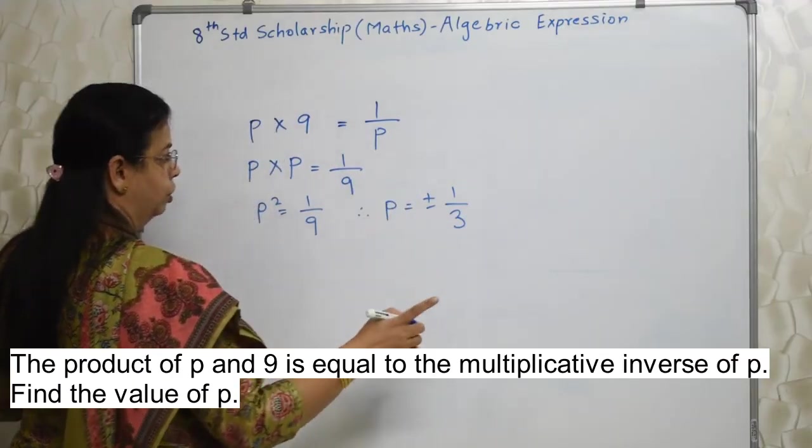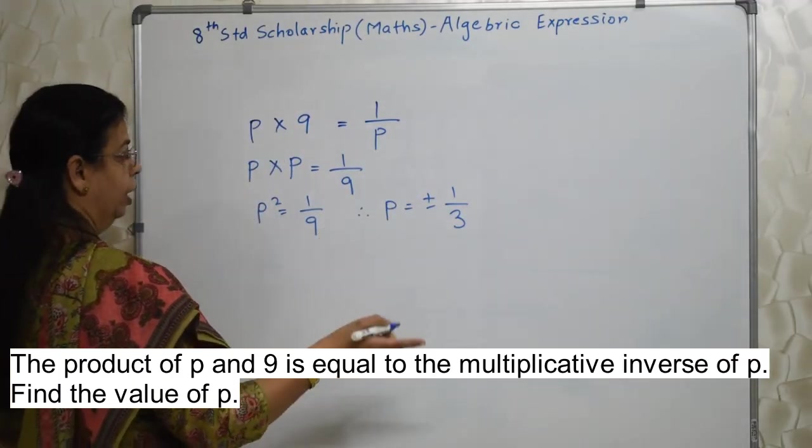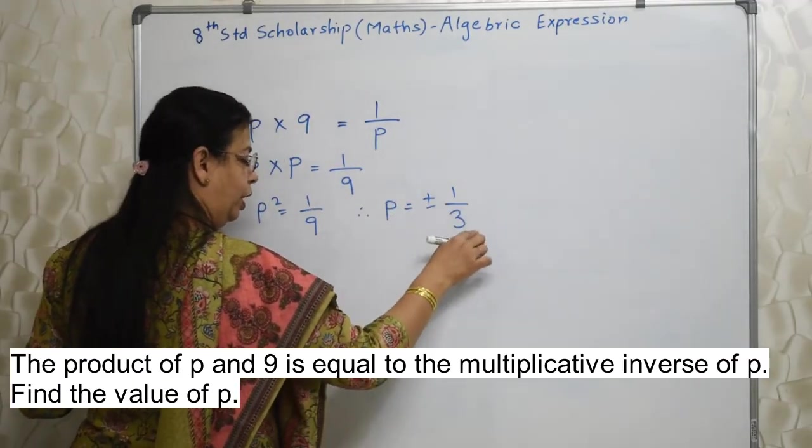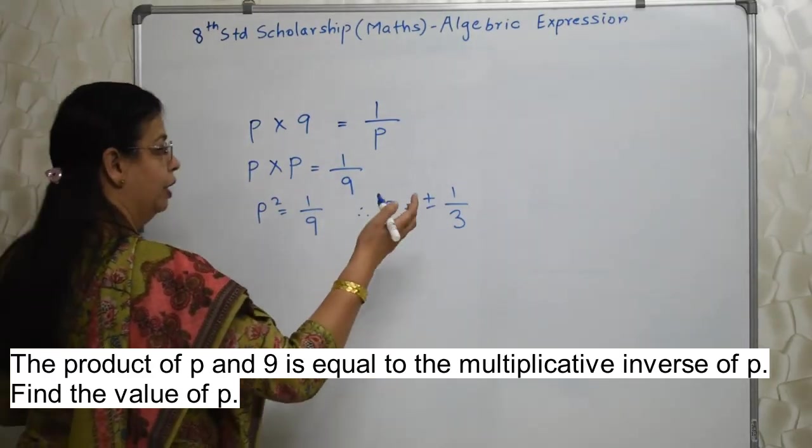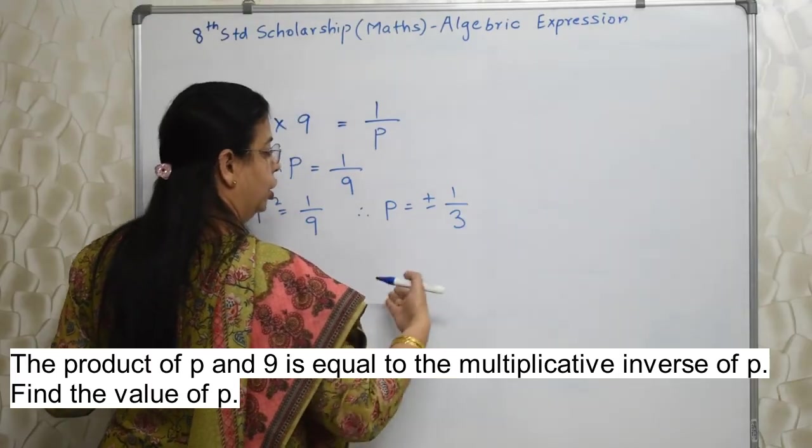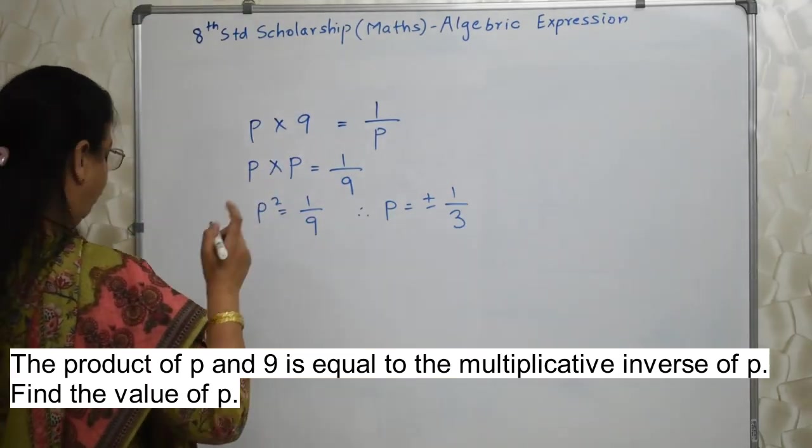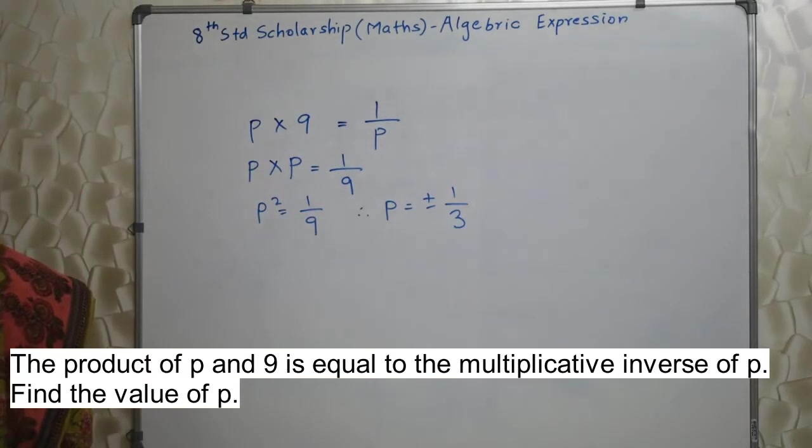Therefore p is equal to plus or minus 1 upon 3. Depending on the options given, if they have given minus 1 upon 3, choose that, only minus 1 upon 3. If only plus 1 upon 3, then take that. If they expect you to choose 2 options then they will give 1 upon 3 plus and minus 1 upon 3, you need to choose both. So you have to keep an eye on the final question and options given.